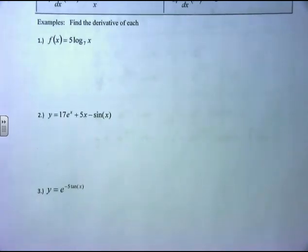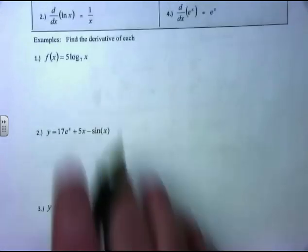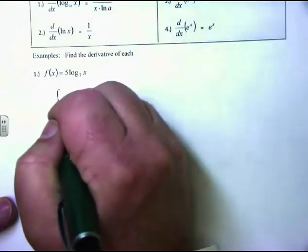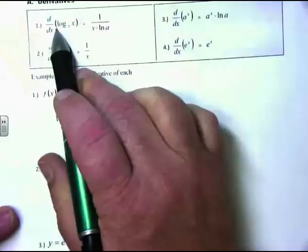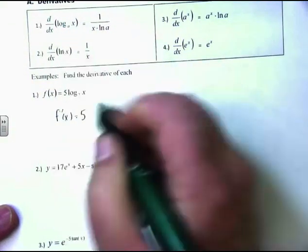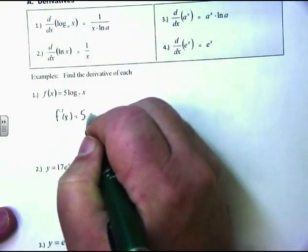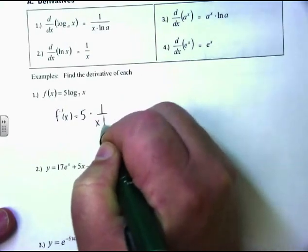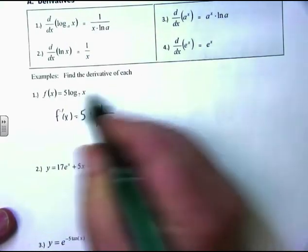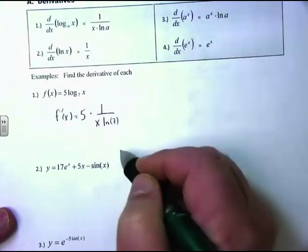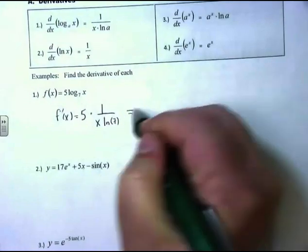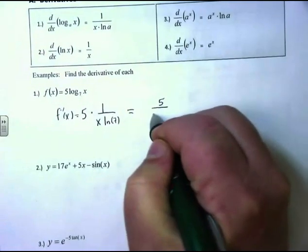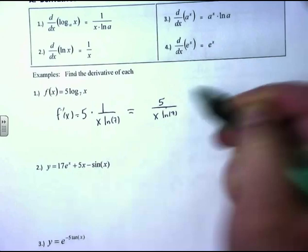Example 1: if f(x) equals 5 log base 7 of x, find the derivative. The derivative: 5 is a constant, leave it alone. This is the classic log base a of x, so the formula gives us 5 times 1 over x times the natural log of 7. Cleaning that up: f′(x) equals 5 divided by x times the natural log of 7.